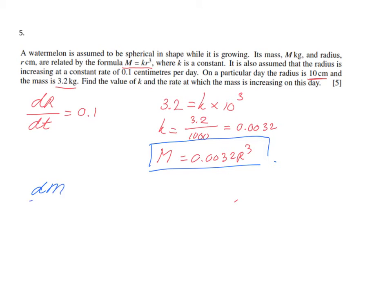With respect to time, connected rates of change, we have to connect two rates of change. To find dm/dt, they give us dr/dt for a reason.